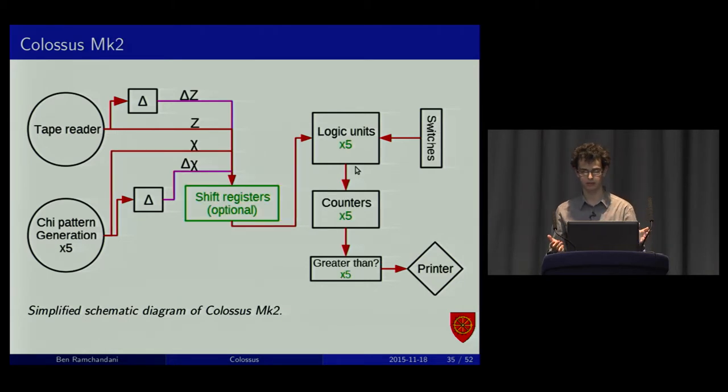Colossus Mark II. About six months later. It actually added shift registers. It had five logic units and five counters. They all were in parallel. So, it's effectively a five times speed up. This one had about 2,400 valves in it. The first Mark I had about 1,600. It was programmed by a pretty big array of switches.